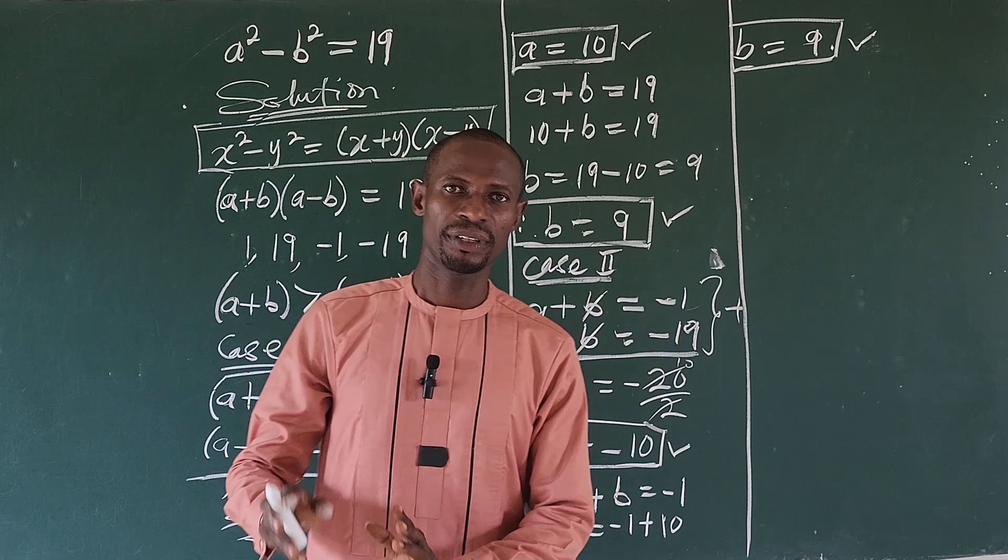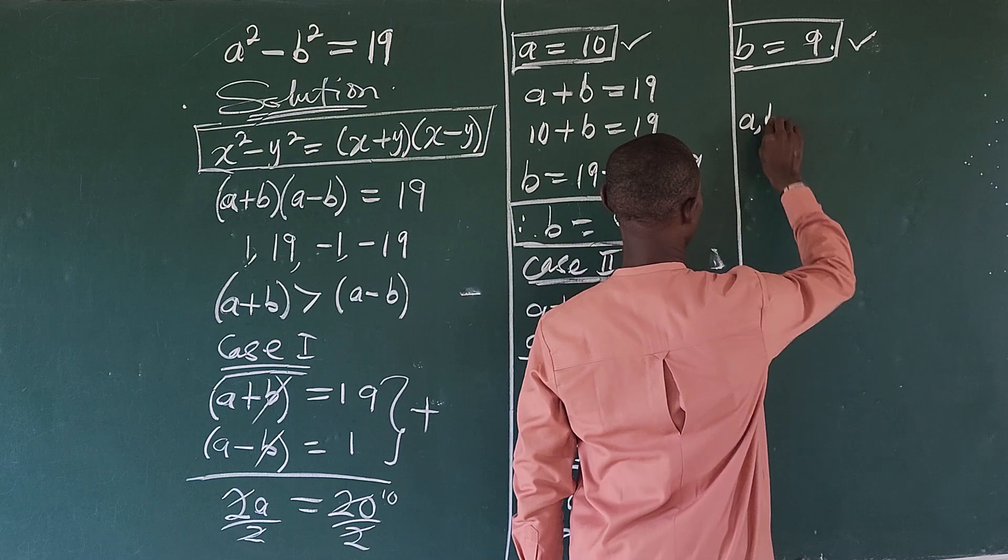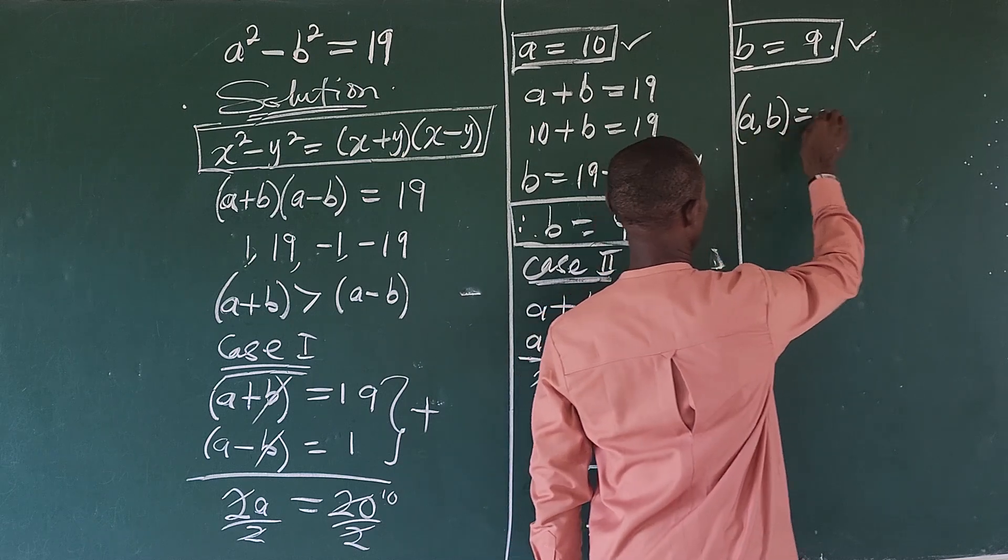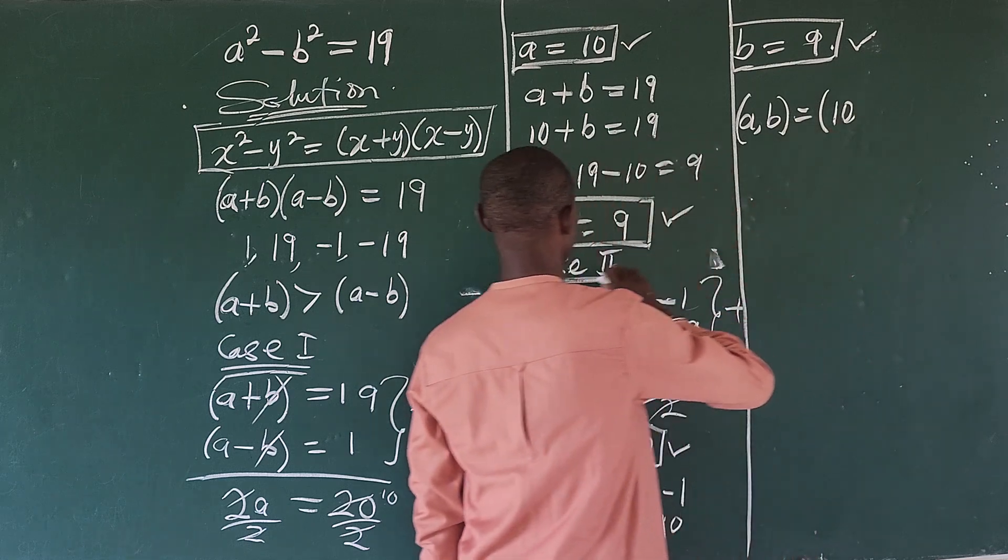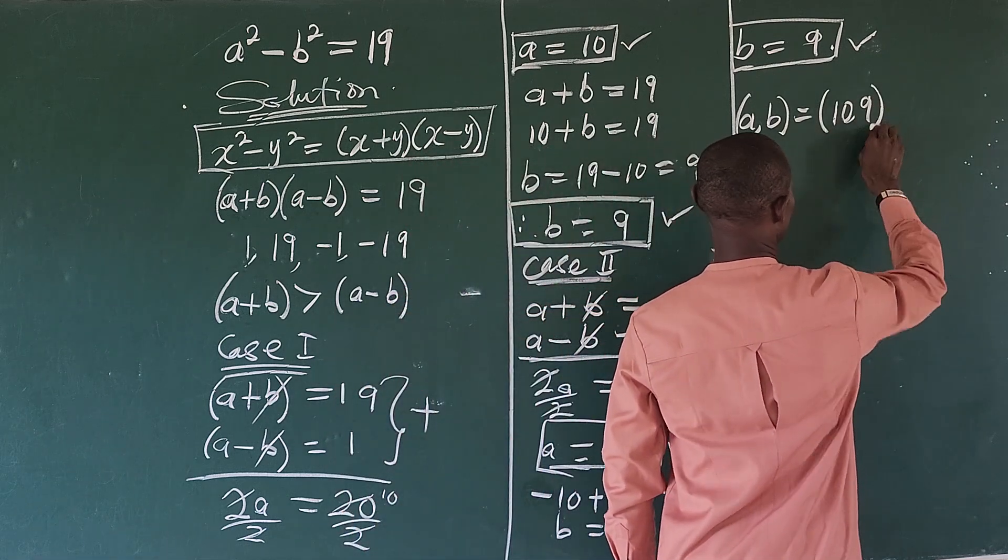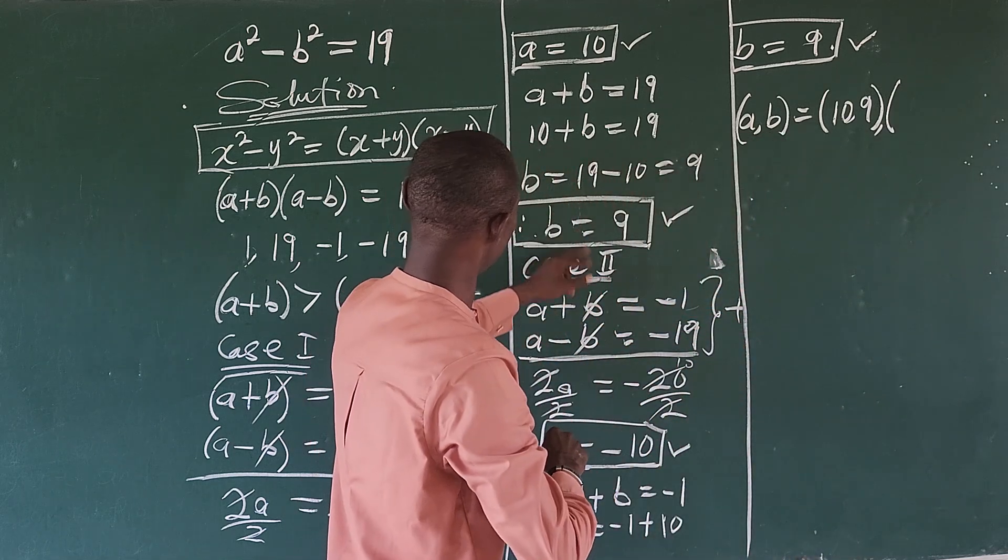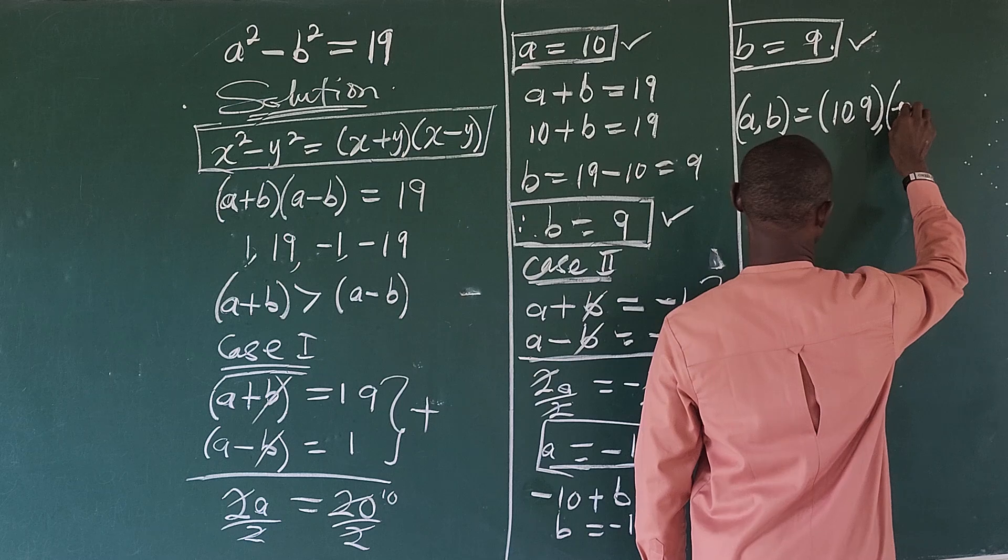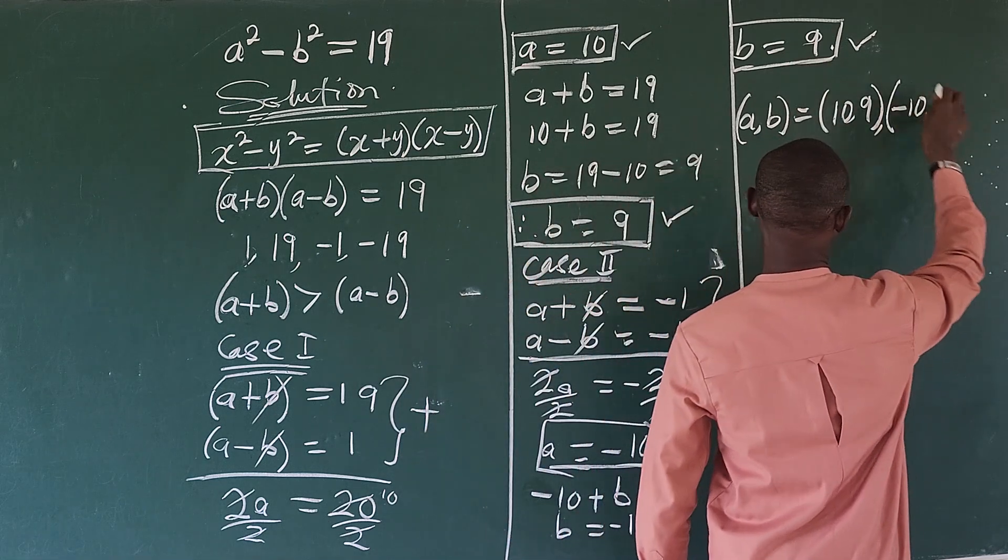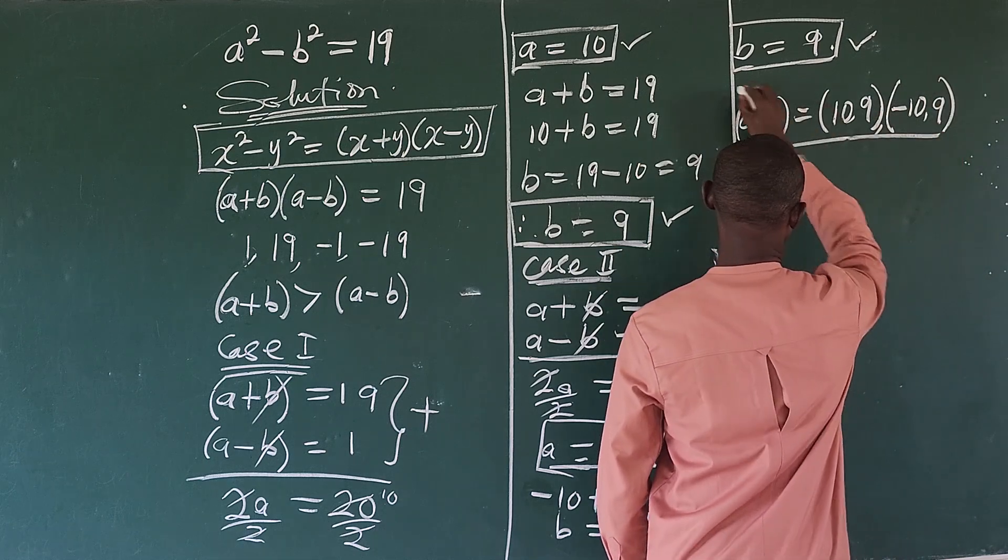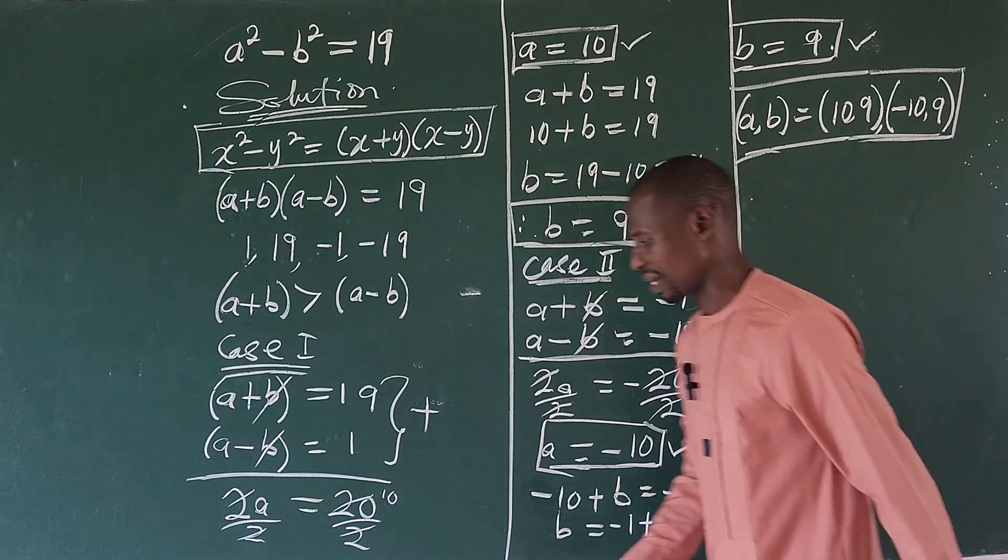So what are the pairs of a and b that will satisfy the original equation? So we're going to have (a, b). The first one, we have 10 comma 9. And the second one, we have -10 comma positive 9. So if we plug these values into our original equation, we'll discover that they will satisfy the original equation.